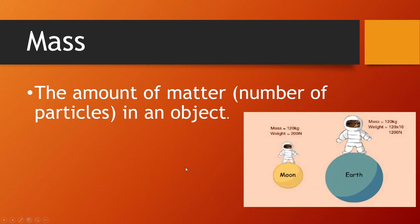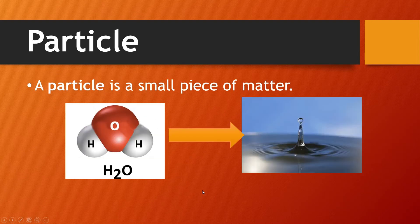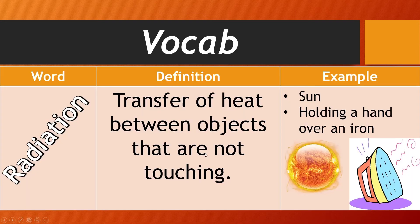Mass is the amount of matter or number of particles in an object. Your mass stays the same whether you're on Earth or on the moon, but your weight will differ because of the amount of gravity. A particle is a small piece of matter — it makes up your mass. Think of molecules, atoms, particles — they're just little things that make up something bigger.